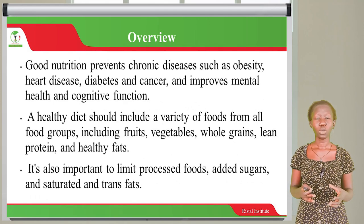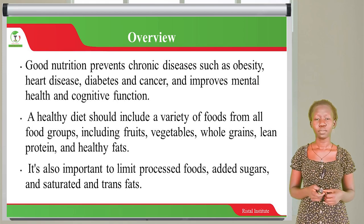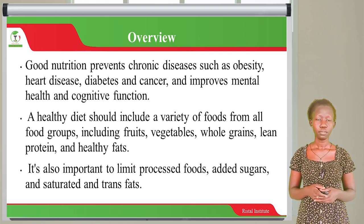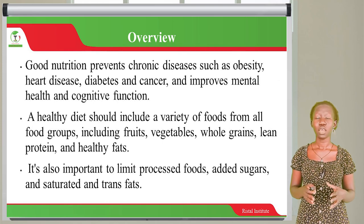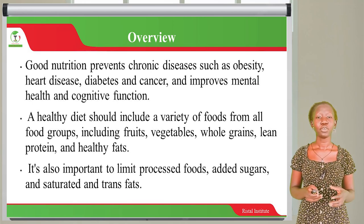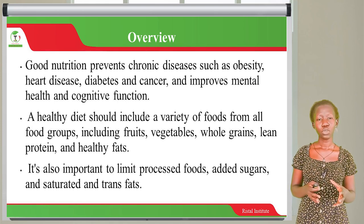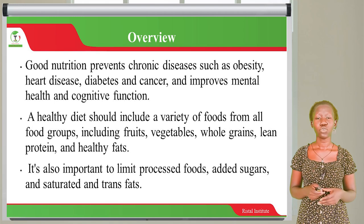When we eat well and have good nutrition, it helps us to prevent chronic diseases — for example, obesity, heart disease and cancer. It also improves our mental health and cognitive function. When we talk about a healthy diet, it should include a variety of food items from all the food groups — for example, fruits, vegetables, whole grains, lean proteins and healthy fats. But as we consume all these food items, we have to be mindful to limit processed foods, added sugars and saturated fats.